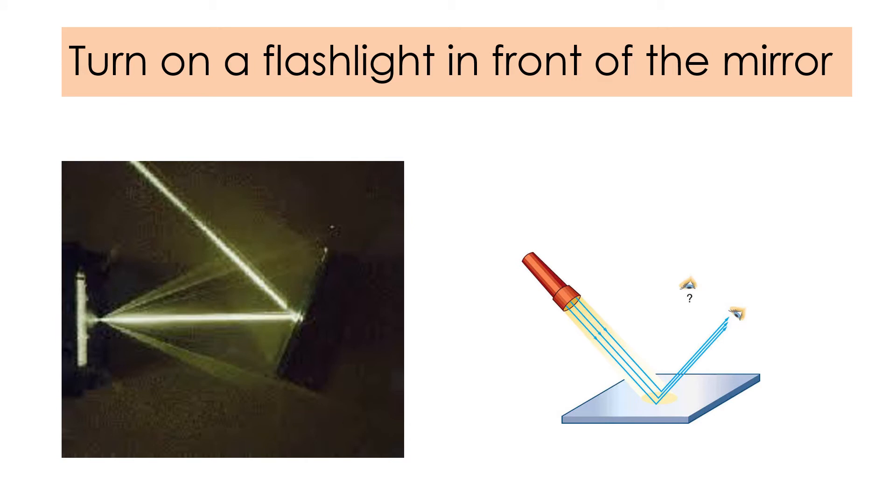So, do you understand? Luminous means it produces light. Then non-luminous means it does not produce light. Okay, so now children, let's try.